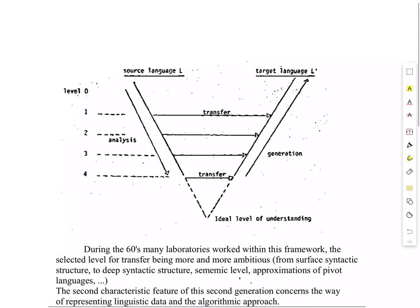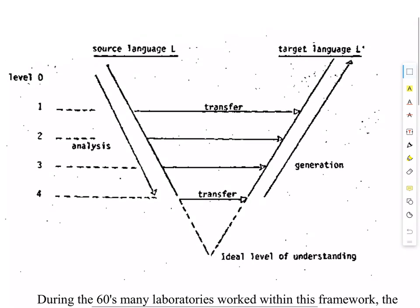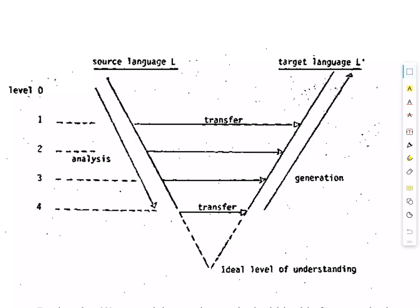In this report, Vauquois included a triangle diagram. In the triangle, Vauquois assumes that there is a source language in the upper left and a target language in the upper right. The goal of machine translation is to get from the source language representation to the target language representation. Vauquois uses the terminology of various levels: level 0, level 1, level 2, level 3, level 4, and so on.